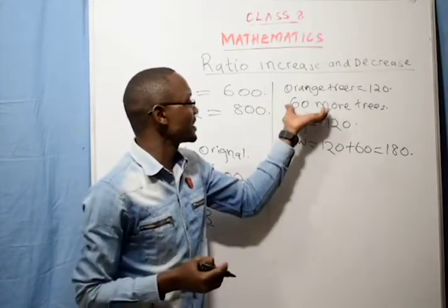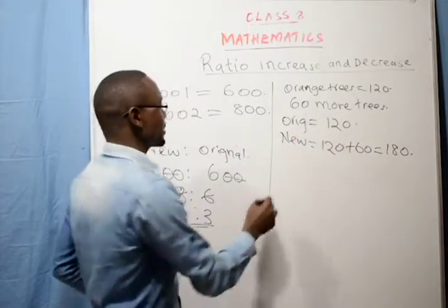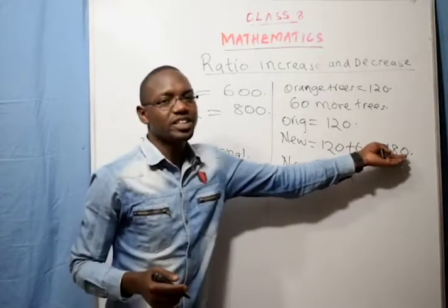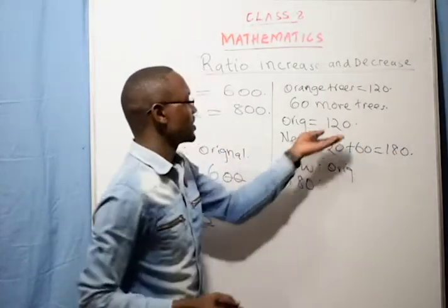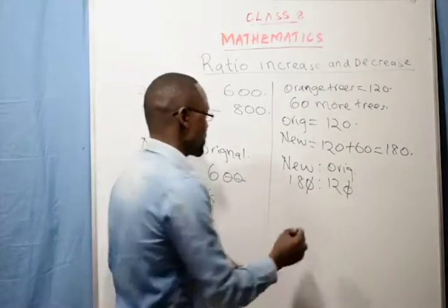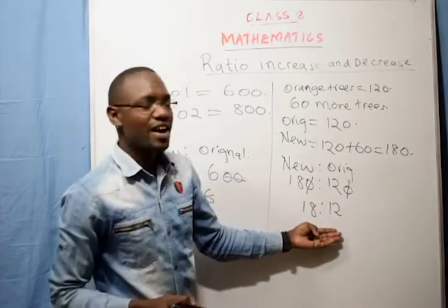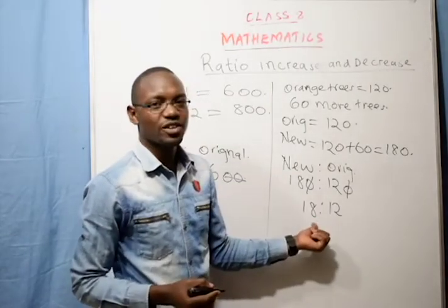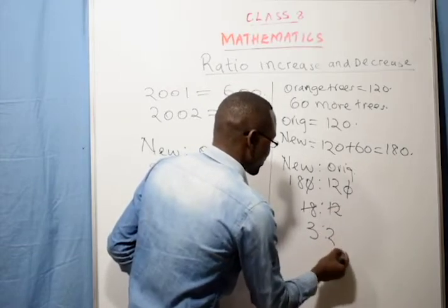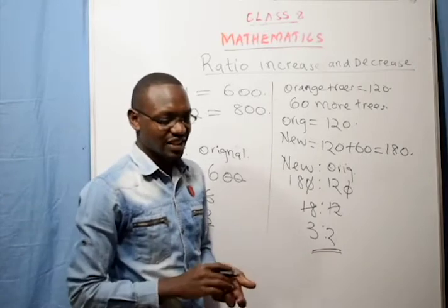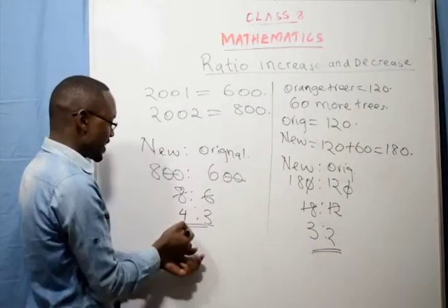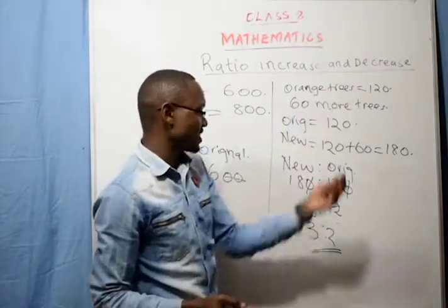Our ratio increase is new is to original: 180 is to 120. We simplify by 10, giving us 18 is to 12. We simplify further by 6: 3 is to 2. So the ratio increase is 3 is to 2. In the first example, the ratio increase was 4 is to 3; in the orange trees example, it is 3 is to 2.